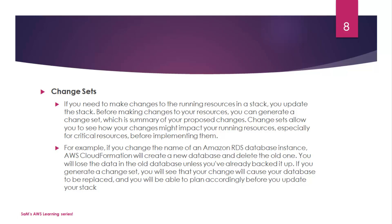There is something called a change set. If you need to make changes to the running resources in a stack, you update the stack. Before making changes to the resource, you can generate a change set, which is basically a summary of your proposed changes. A change set allows you to see how a change might impact your running resources — especially for critical resources — before implementing them, which is a really important feature. For example, if you change the name of an Amazon RDS database instance, AWS CloudFormation will create a new database and delete the old one, meaning you will lose data in the old database unless you have already backed it up. If you generate a change set first, you will see that your change will cause the database to be replaced and you can plan accordingly before you update your stack.